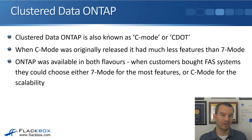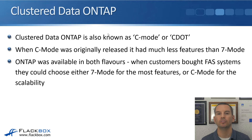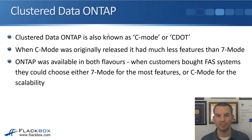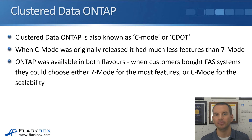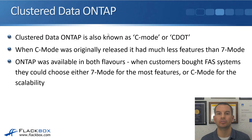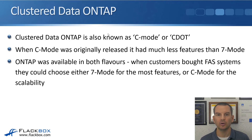A quick refresher of what we covered in the last lecture: Clustered Data ONTAP is also known as C-Mode, or C-DOT. When it was originally released, it had fewer features than seven-mode — that's why NetApp ran them both at the same time. ONTAP was available in both flavors, so when you bought a FAS system you could either choose seven-mode for the full feature set, or clustered ONTAP for the scalability.